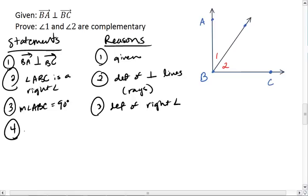Meaning that since the measure of angle 1 plus the measure of angle 2 equals the measure of angle ABC, which is by the angle addition postulate.